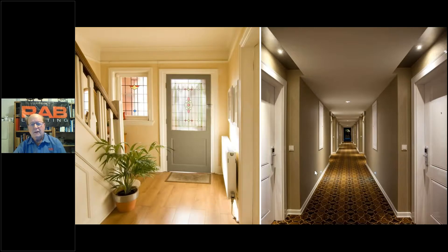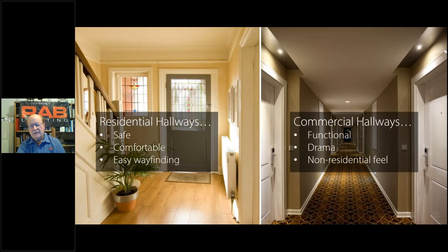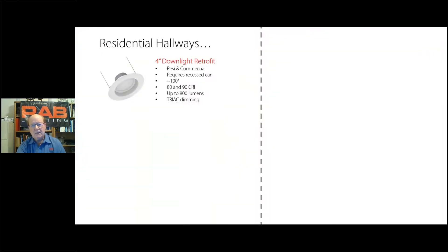Let's move into hallways. Over the residential hallway, you want it to be safe and comfortable with easy wayfinding. This looks like a hotel corridor — functional, with some drama. Some applications for residential hallways include the 4-inch downlight and the 4-inch edge-lit wafer, which we've already discussed.